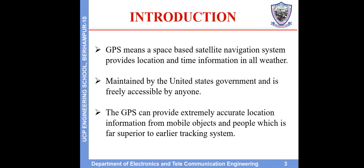Introduction. GPS means a space-based satellite navigation system that provides location and time information in all weather, maintained by the United States government and freely accessible by anyone. The GPS can provide extremely accurate location information from mobile objects and people, which is far superior to older tracking systems.